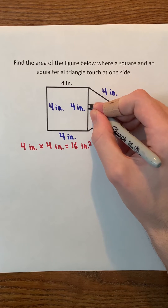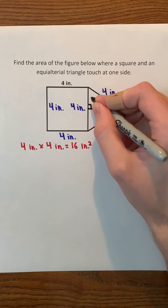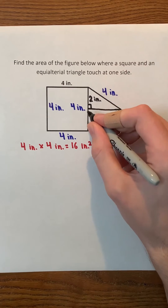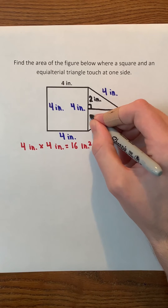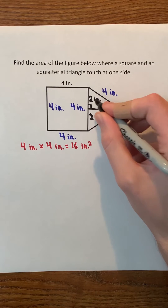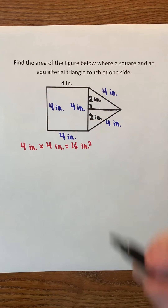Thus, this angle right here must be 90 degrees, and this side length must be 2 inches. In addition, this side length must also be 2 inches. 2 plus 2 is 4.